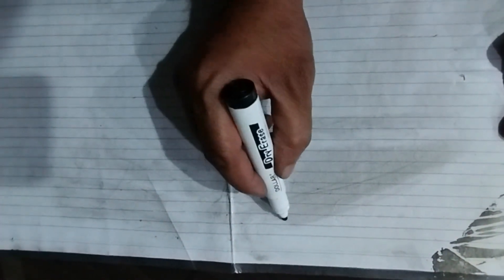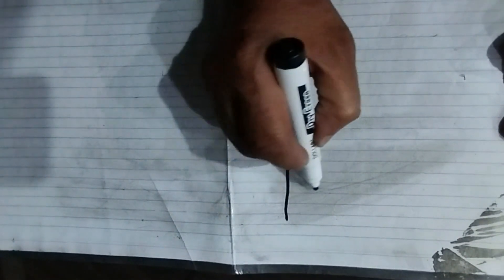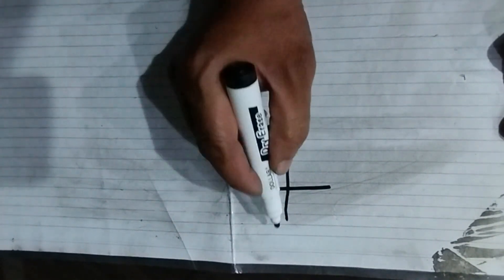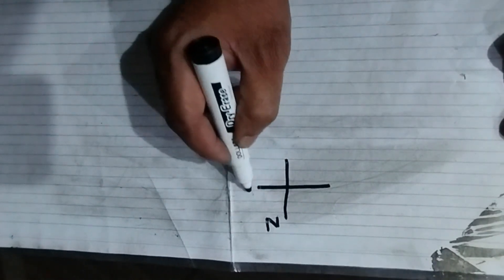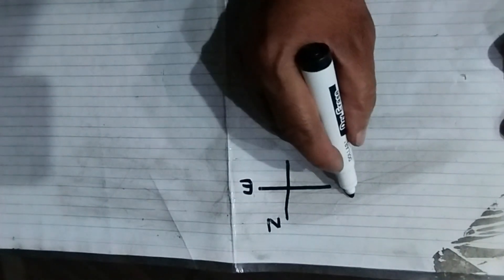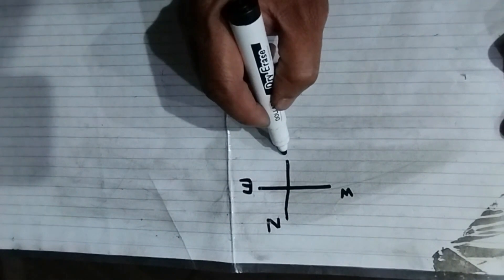First of all we will draw directions. North is always upside and east to the right and west to the left and south downward side.